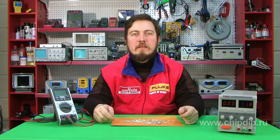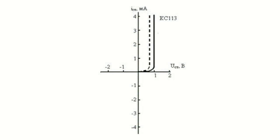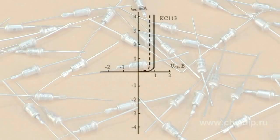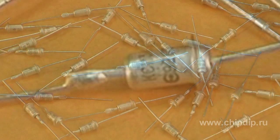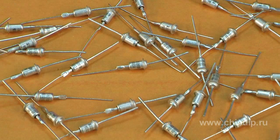A Stabistor is a semiconductor diode in which the voltage-stabilizing direct branch of the volt-ampere characteristic is used. In the direct bias area, the voltage of the Stabistor depends on current only weakly. A distinctive feature of Stabistors compared with Stabilitrons is the lower stabilizing voltage, which is approximately 0.7V.